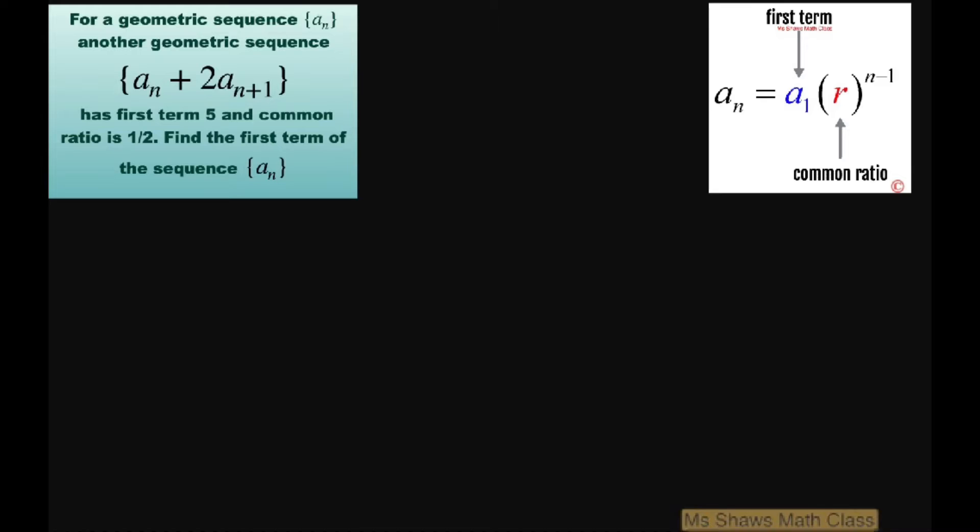We're going to let a and r be our first term and common ratio respectively. So we have a sub n equals a times r to the power of n minus 1.